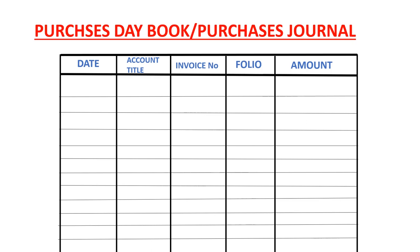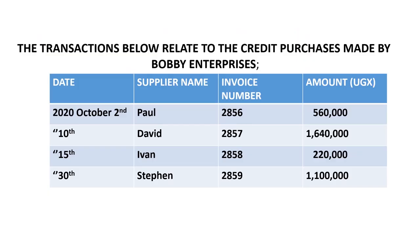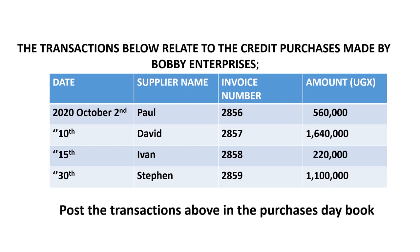It is not that different from the sales day book like we have seen in our previous video. After that, we will get right into the worked example. The transactions below relate to the credit purchases made by Bobby Enterprises. The question requires us to post those transactions into the purchases day book, and that is exactly what we are going to do.